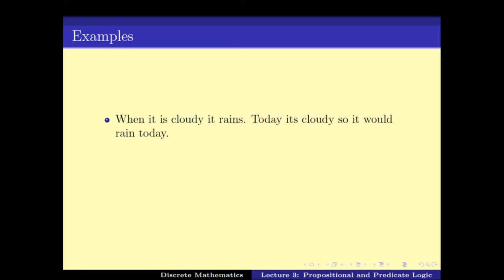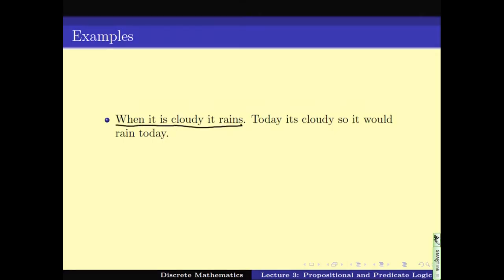Now, what are the set of assumptions? In this statement, the sentence 'when it is cloudy, it rains' and the sentence 'today it is cloudy' are both part of the assumption. And what is the deduction? The deduction is 'it would rain today.' So we see that the assumption is composed of two statements connected by the connective AND.